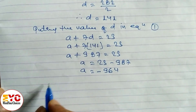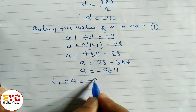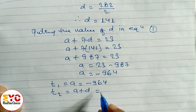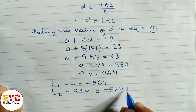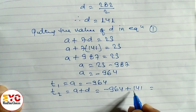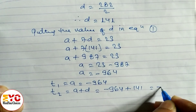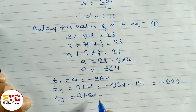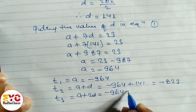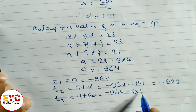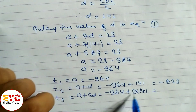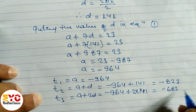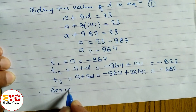Find the series means finding three to four terms. T1 equals a equals minus 964. T2 is a plus d: minus 964 plus 141 equals minus 823. T3 is a plus 2d: minus 964 plus 2 times 141 equals minus 964 plus 282 equals minus 682.